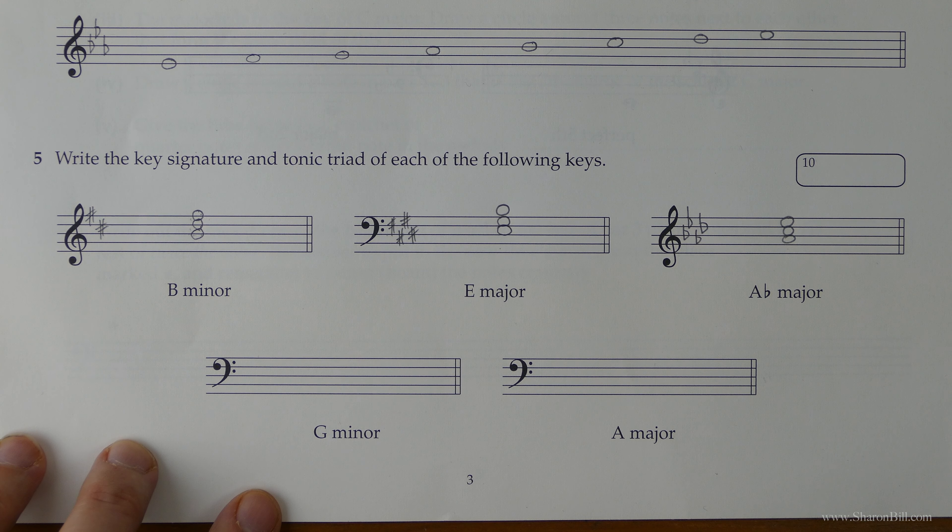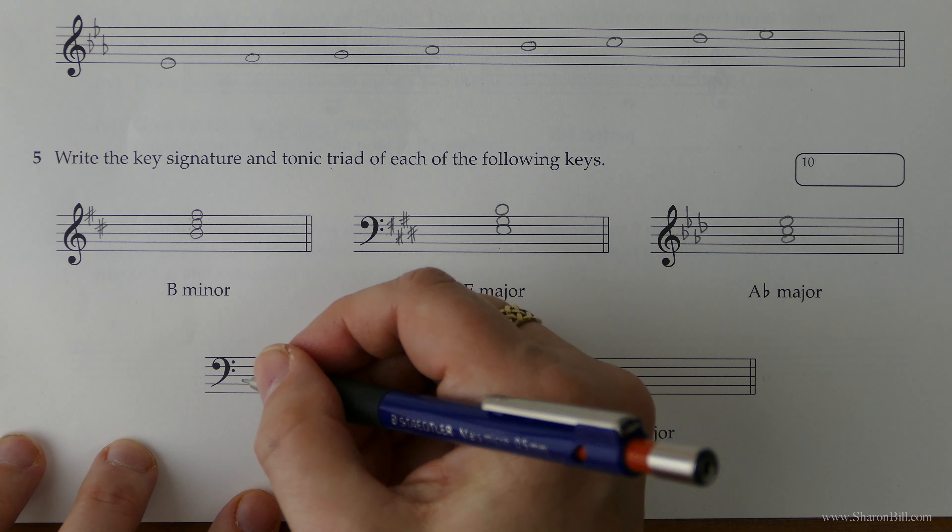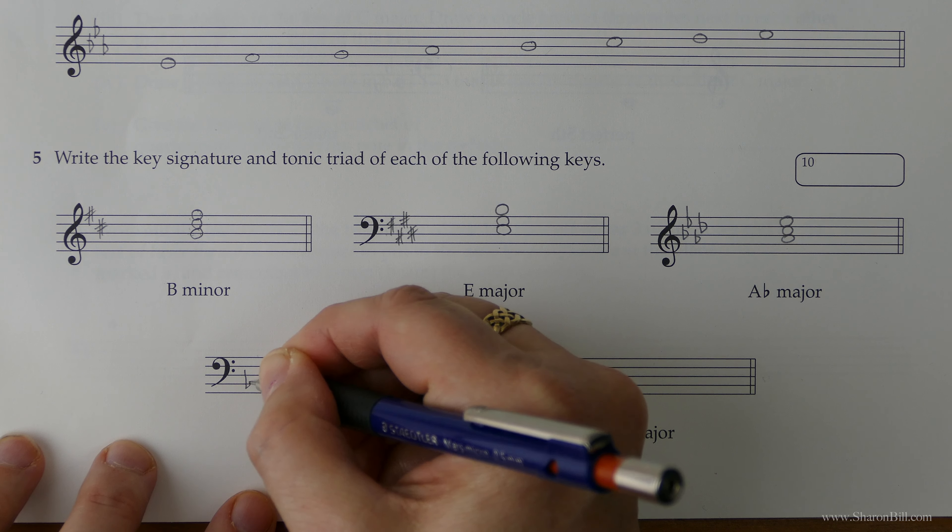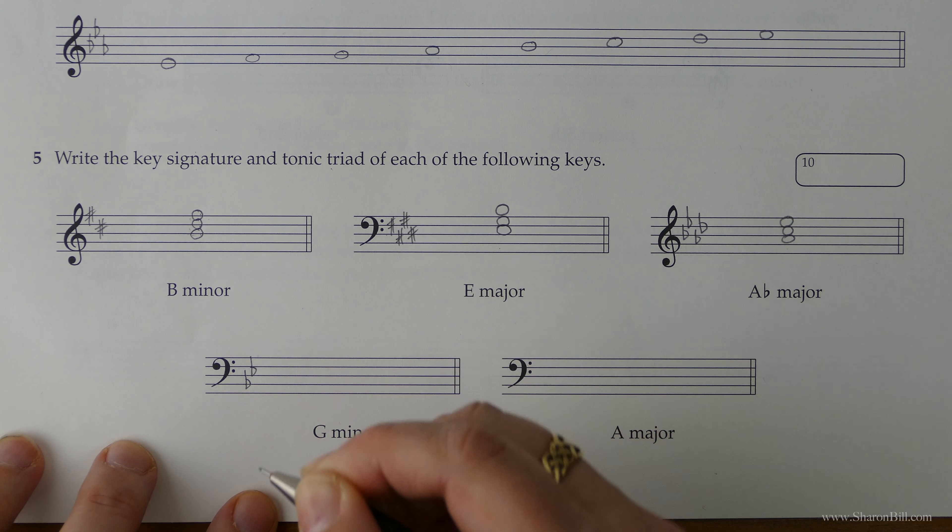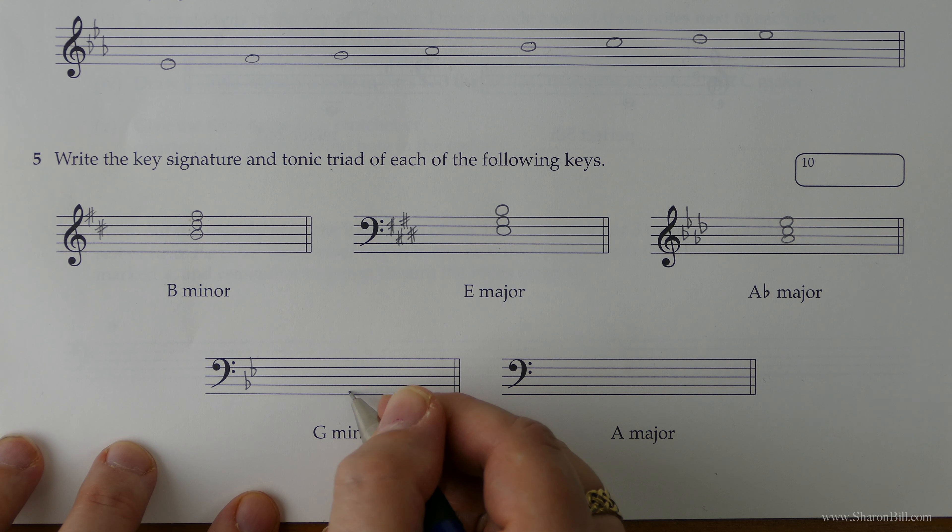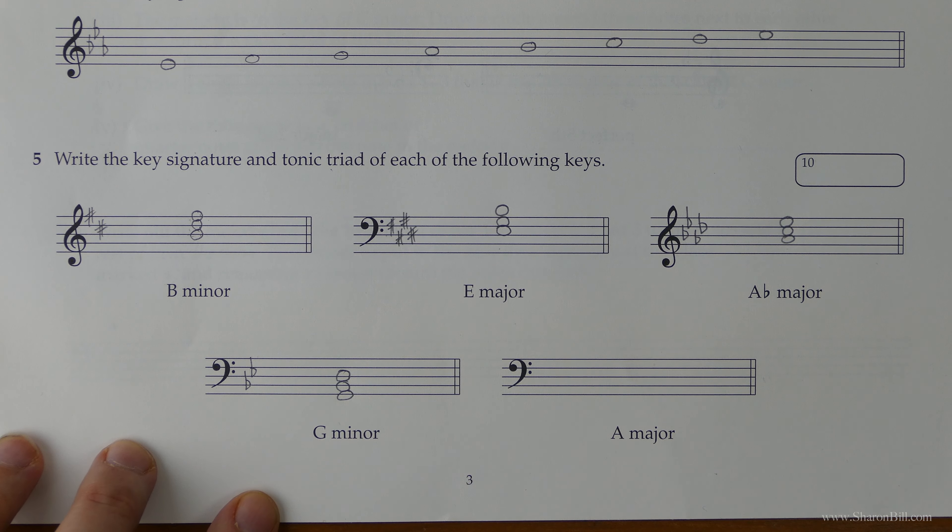So G minor is related to B flat major. So we need a key signature of B flats and E flats in the bass clef. And then note G is our tonic, because we're in G minor, first, third, fifth. There's our tonic triad.